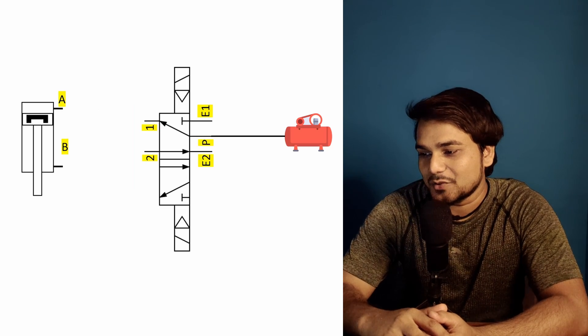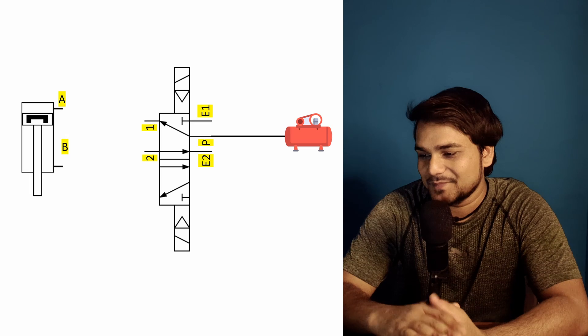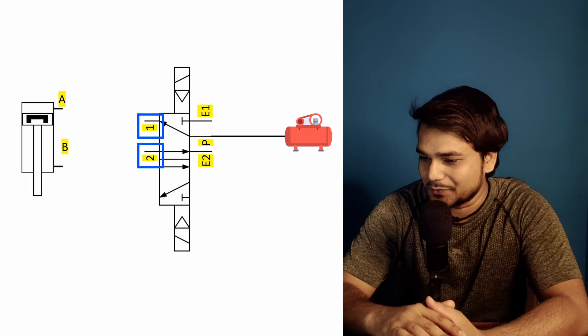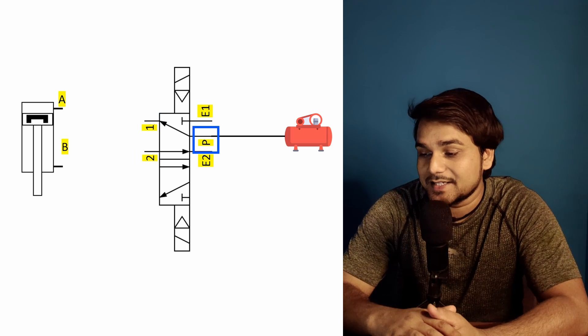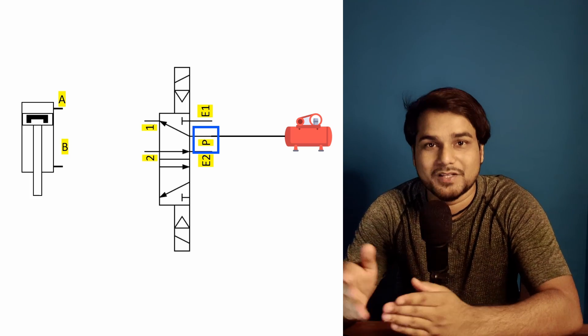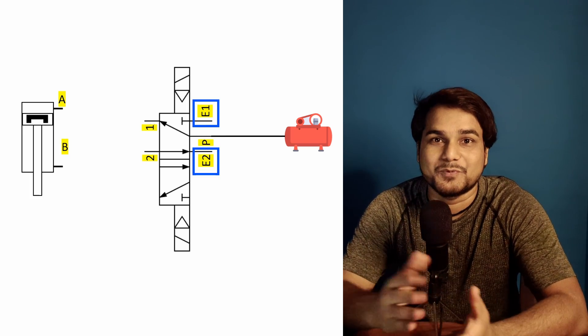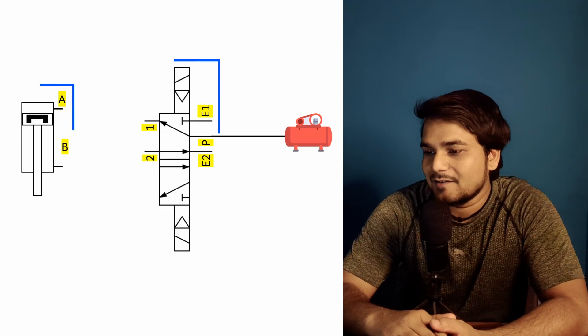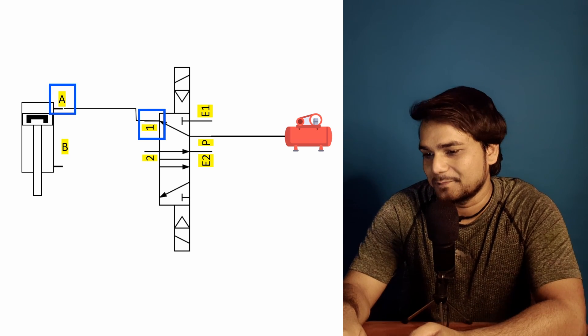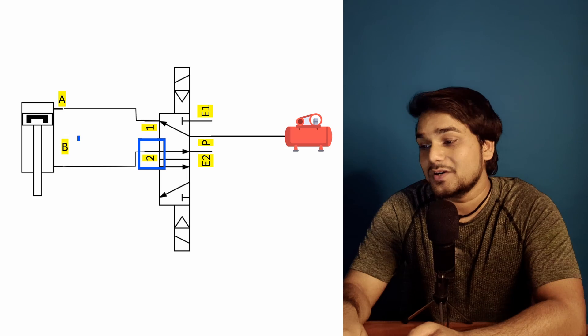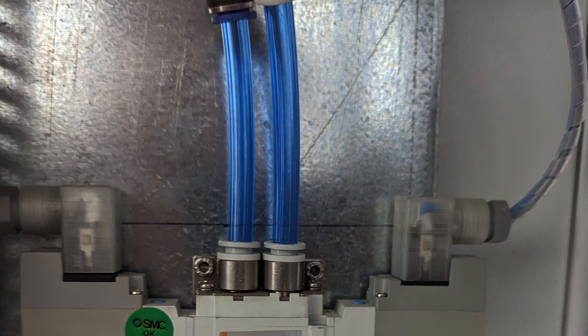I am placing a 5/2 directional control valve here. There are two ports on the left side — port 1 and port 2 — which connect to the pneumatic cylinder ports. On the right side there are three ports: the middle port is the compressed air supply port, indicated as P for pressure, and the other two are exhaust ports E1 and E2. Now I am connecting valve port 1 to cylinder port A and valve port 2 to cylinder port B using a soft nylon pneumatic tube.